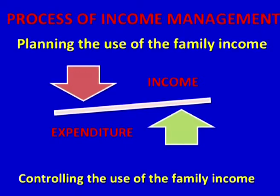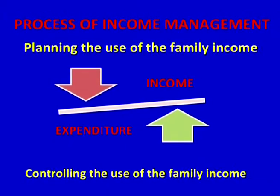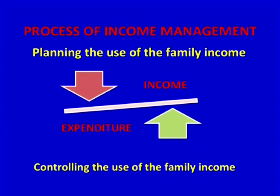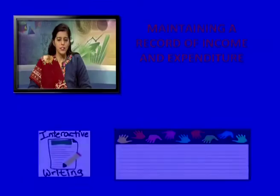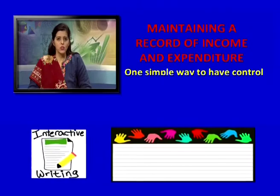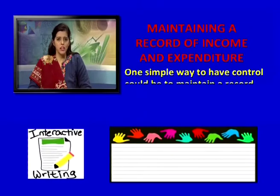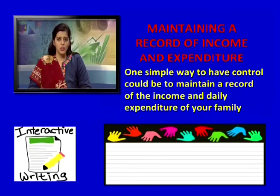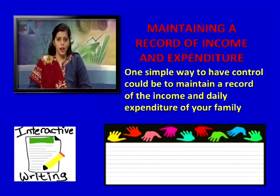The process of income management involves: planning the use of family income, controlling the use of family income, and maintaining a record of income and expenditure. One simple way to have control could be to maintain a record of the income and daily expenditure of your family.